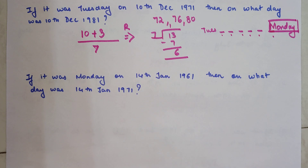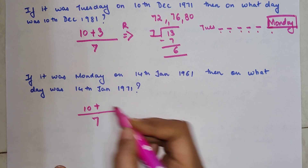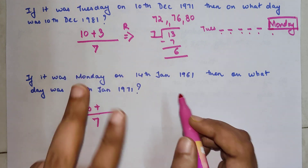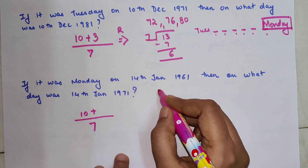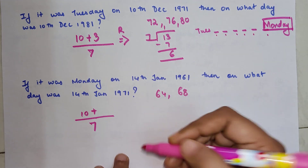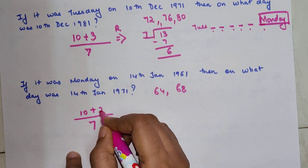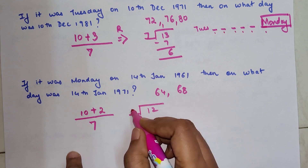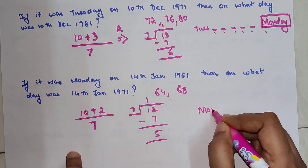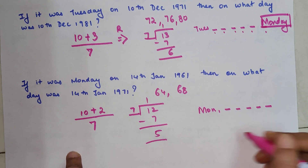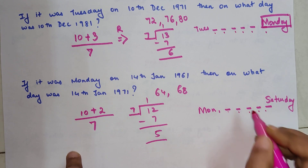The next question also has a 10-year gap, but this time only 2 leap years fall within the range: 1964 and 1968. The next leap year, 1972, is outside the range. So you calculate 10 plus 2 equals 12, divide by 7, and the remainder is 5. Going ahead 5 days from Monday: Tuesday, Wednesday, Thursday, Friday, Saturday. The answer is Saturday.